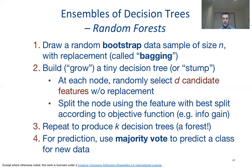The final question is how we actually do the prediction given so many trees. Typically we use a majority vote — each tree produces an answer for a test data point, and those answers may or may not agree among the trees, but the majority is taken as the vote of the model.